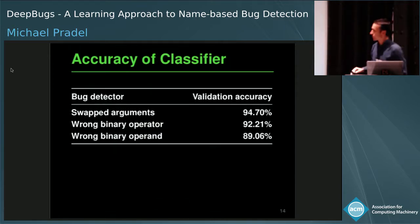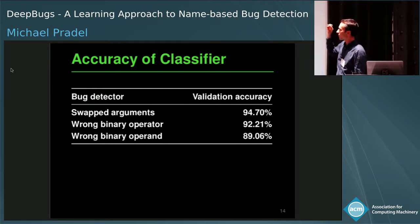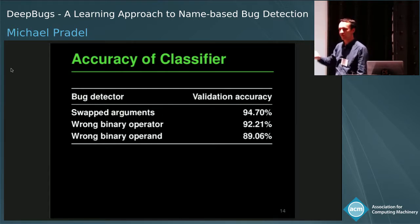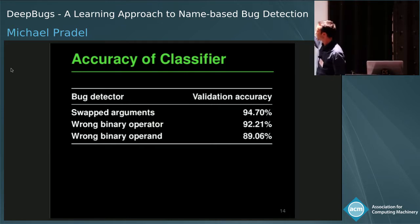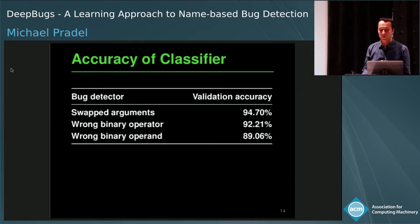Here's the accuracy of the classifier: this percentage shows, after training, for how many examples the classifier makes the right prediction — calling it buggy or non-buggy. The classifier achieves close to 90% or more than 90% for all three bug patterns. After training, it is really good at identifying buggy code and distinguishing it from non-buggy code.